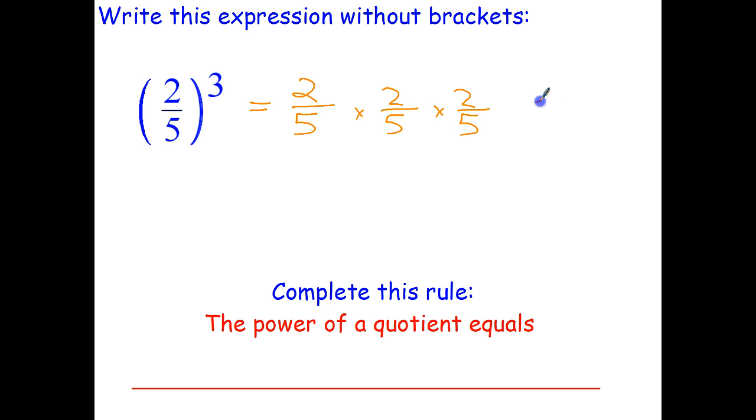Now recall the rule for multiplying fractions. To multiply fractions we multiply the numerators 2 by 2 by 2 which is 2 to the power of 3. And we multiply the denominators 5 times 5 times 5 or 5 to the power of 3.